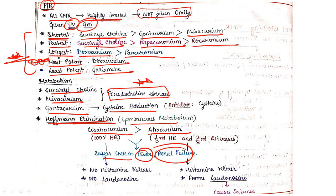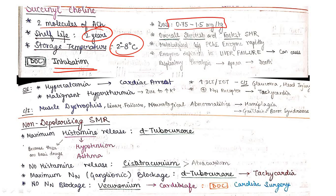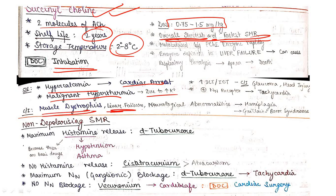Cisatracurium does not cause histamine release and does not form laudanosine. Atracurium, however, causes histamine release and forms laudanosine, which can cause seizures. Succinylcholine consists of two molecules of acetylcholine; shelf life is two years, storage temperature 2–8°C. It is the drug of choice for intubation; dose is 0.75–1.5 mg/kg. It is the overall shortest and fastest SMR. Side effects: hyperkalemia (may lead to cardiac arrest) and malignant hyperthermia. Contraindications: muscle dystrophies, liver failure, neurological abnormalities.